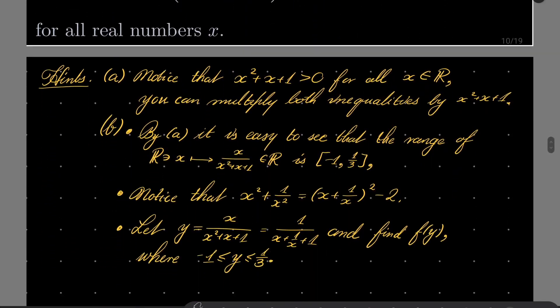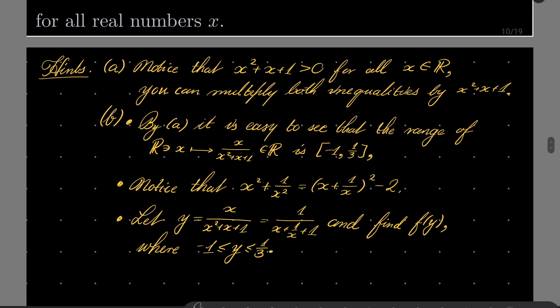And for part B, we will use the result of part A. It is easy to see a slight strengthening of part A, namely the function which maps x to x over x squared plus x plus 1, not only its range is contained in the interval minus 1, 1 third, but the range of this function is indeed the whole interval minus 1, 1 third.